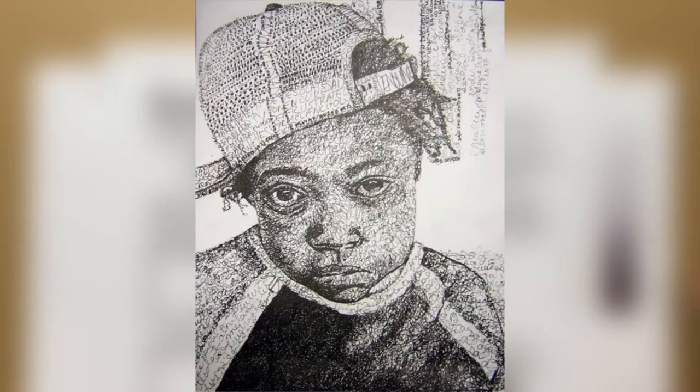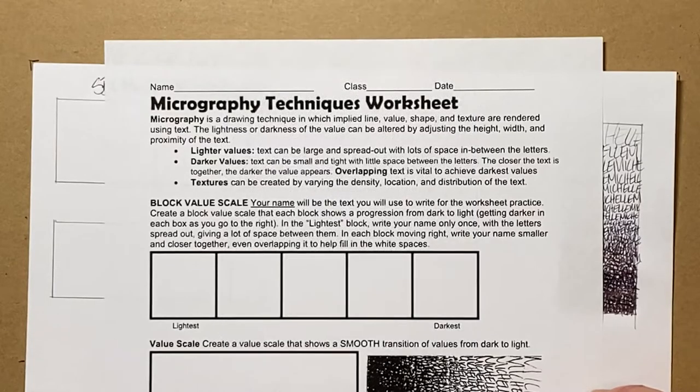In other words, the lightness or darkness of the value can be altered by adjusting the height, width, and proximity of the text. To get lighter values, the text can be large and spread out with lots of space in between the letters. To achieve darker values, the text can be small and tight with very little space in between the letters. The closer the text is together, the darker the value will appear. Overlapping the text is vital to achieving the darkest values.